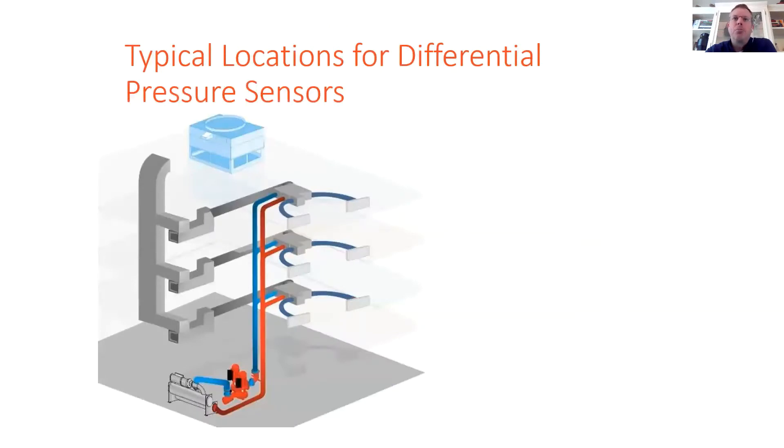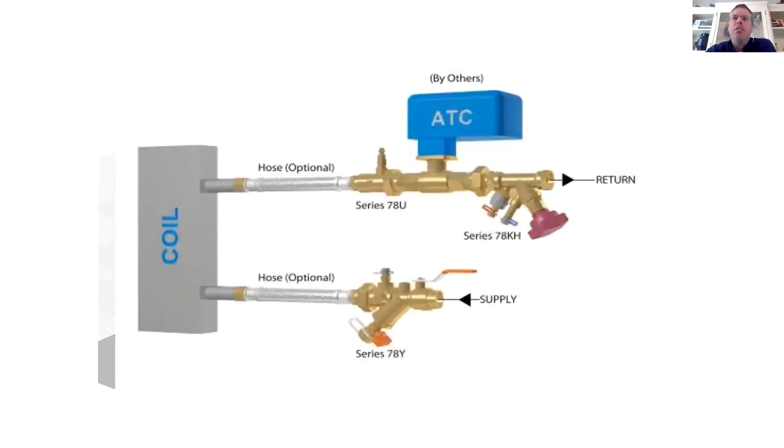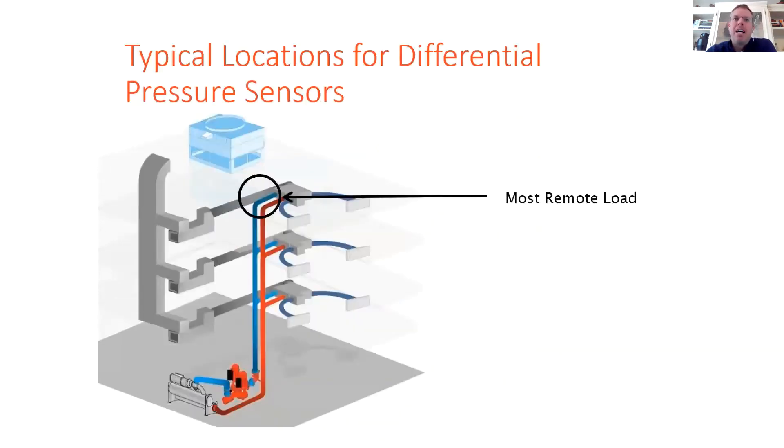The location of the differential pressure sensor is actually critical to the amount of energy that can be saved at the pump. The first and most ideal location is at the most remote load. So this is the load with the longest run of piping where the fluid is going to experience the most pressure drop before reaching the load, and the set point is typically the pressure drop needed to overcome the control valve, the strainer, the balancing valve, the coil, et cetera, and a short run of piping. This allows your minimum head set point to be low in comparison to the full flow head pressure set point and allows a great deal of pump turndown.